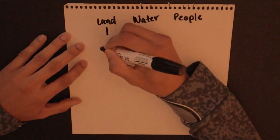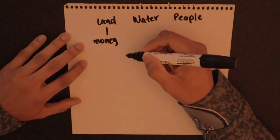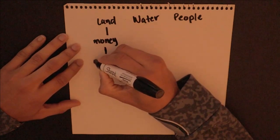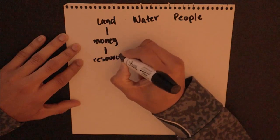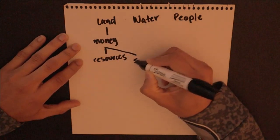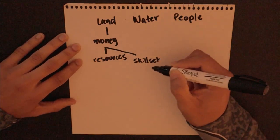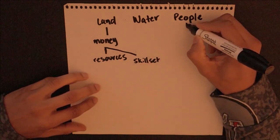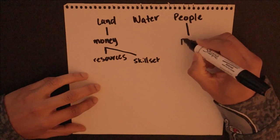So here we have our land. In order to get land, you have to have money — that's obvious. And in order to get money, you have to have resources. Everybody starts with their own set of resources. Let's say, for example, you want to get into making money — you need skills and you're going to have to use what resources you have.